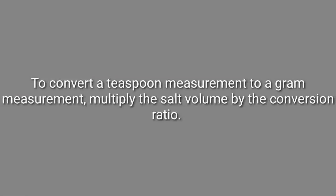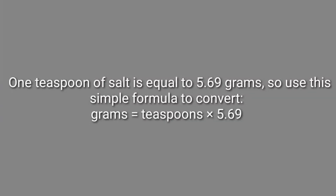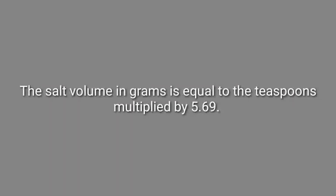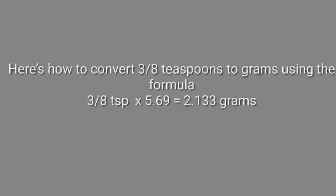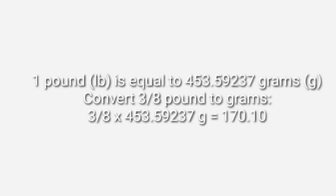Next is eggs — we have 5.5 eggs, which we round up to 6 pieces. Next is salt: 1 teaspoon of salt equals 5.69 grams, so 3/8 teaspoon times 5.69 equals 2.133 grams. For chocolate chips, we convert pounds to grams: 1 pound equals 453.59237 grams. So 3/8 pound times 453.59237 equals 170.10 grams of chocolate chips.